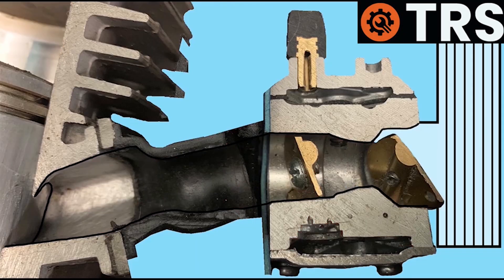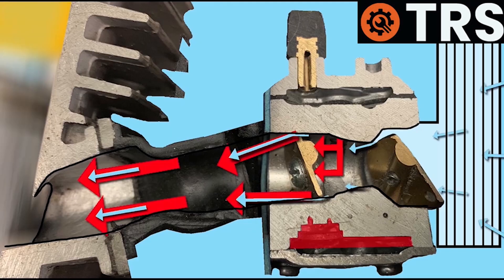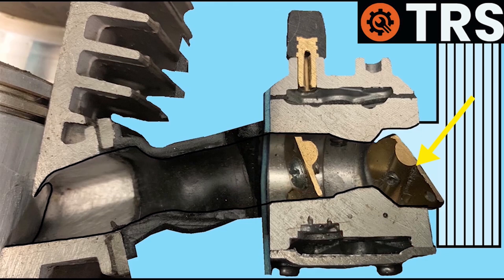One quite common cause of engine flooding is when the operator mistakenly leaves the choke on for too long when they're trying to start the chainsaw.